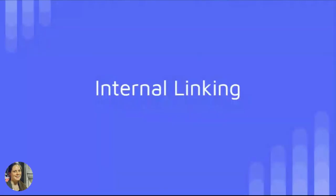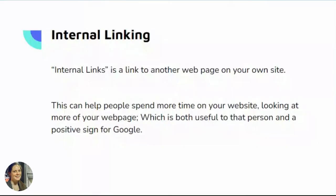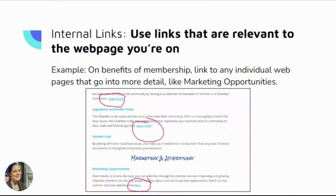Before we go, I want to talk more about internal linking — when you link to another webpage that is also on your site. Doing this will help people spend more time on your website looking at more of your pages, which is useful to that person and is a positive signal for Google. We want to be highly relevant with our links. For example, if we're looking at our benefits of membership webpage, I can link to any individual page that goes into more detail, like marketing opportunities. Here I've detailed several benefits, and for one about legislative and public policy, I put a brief explanation and then linked to the full legislative webpage when they click 'learn more.'